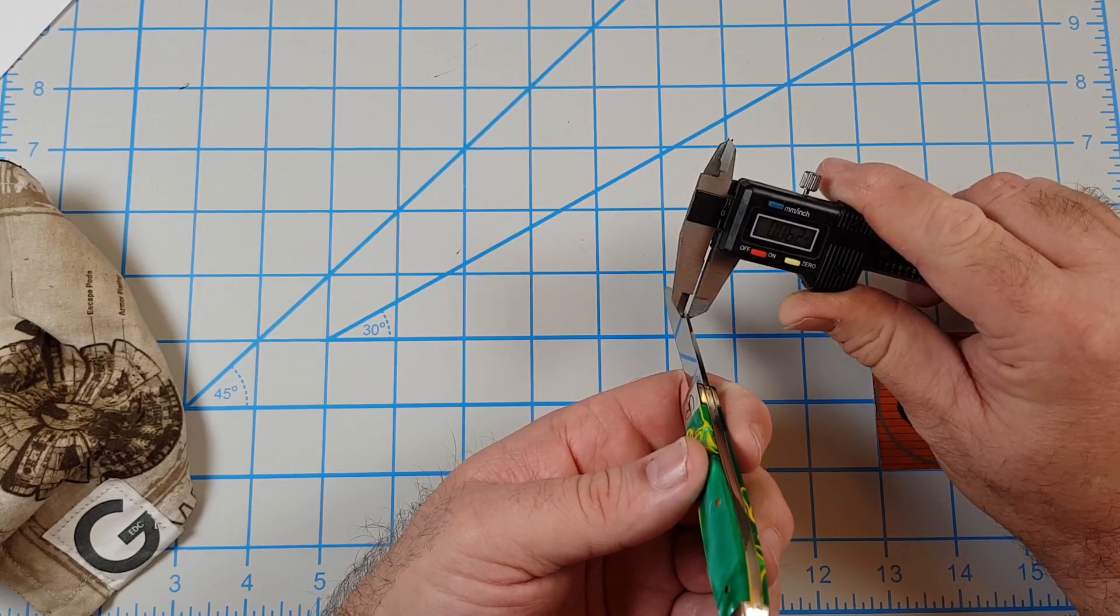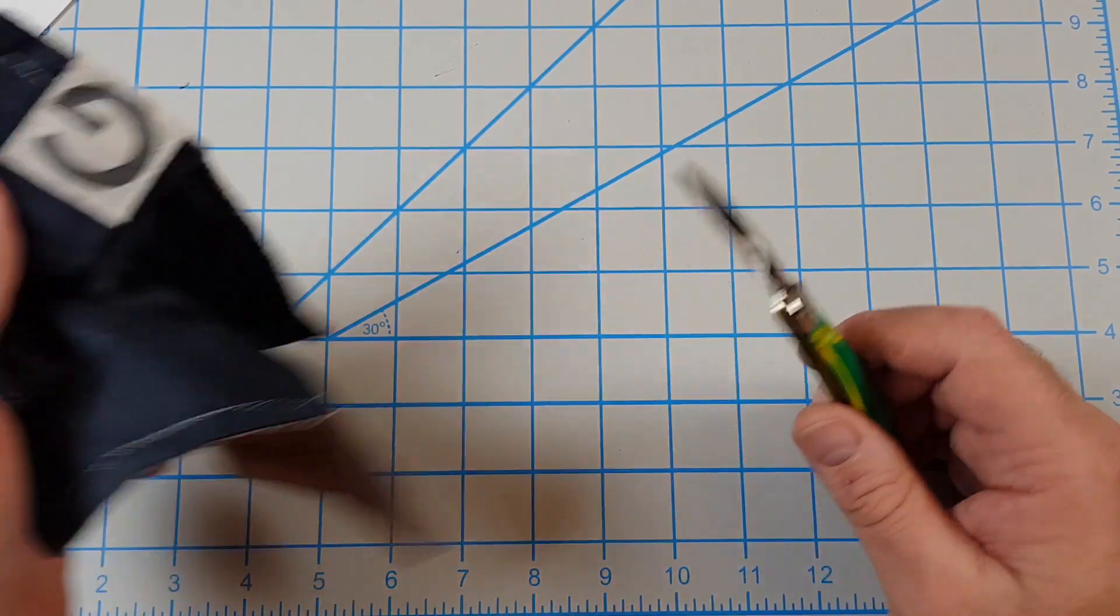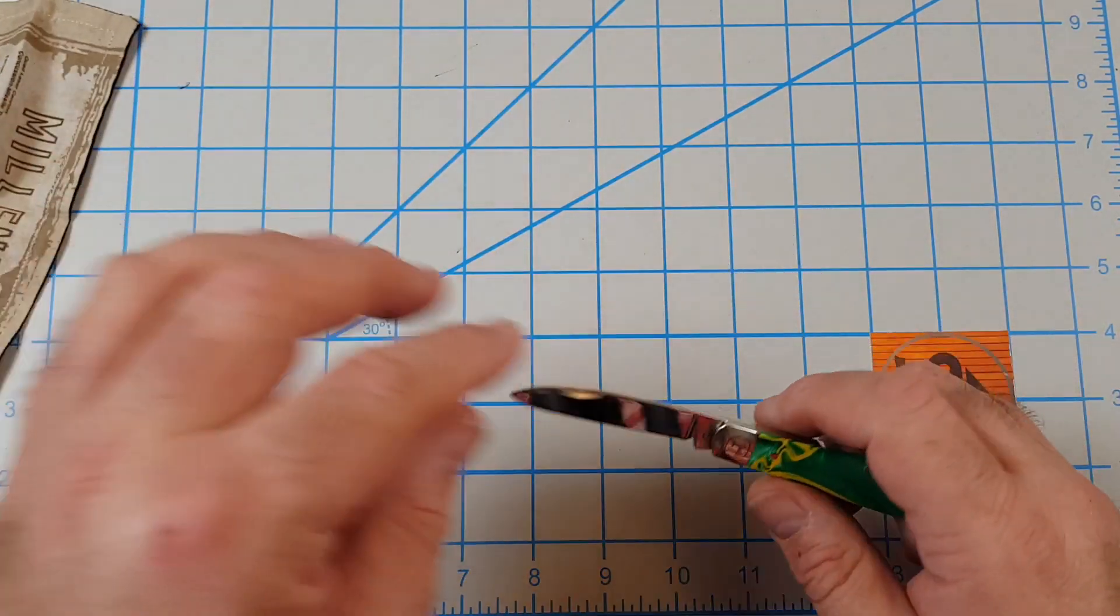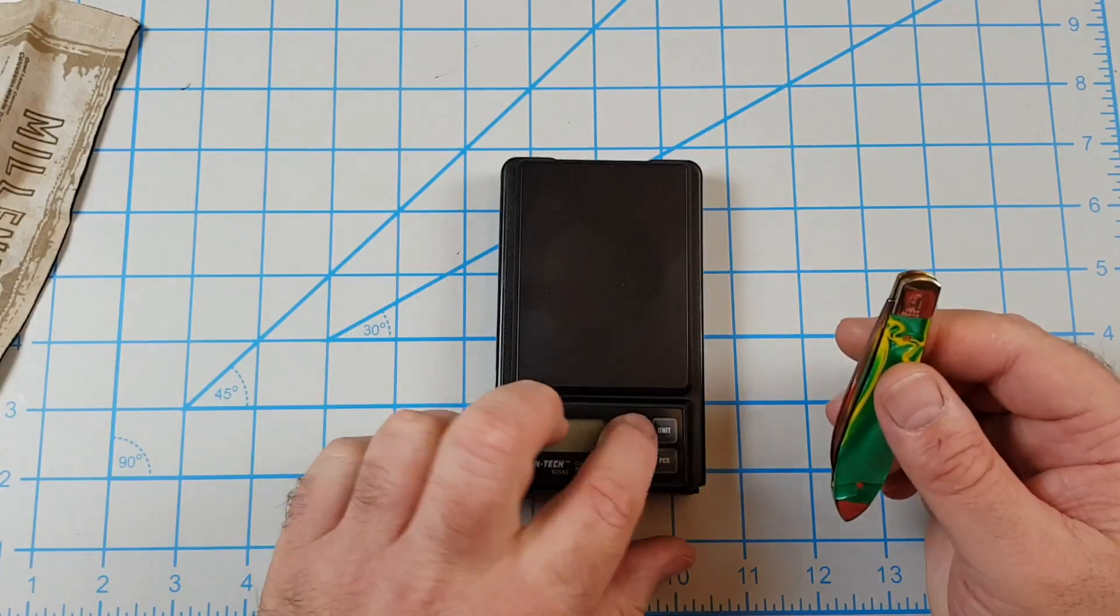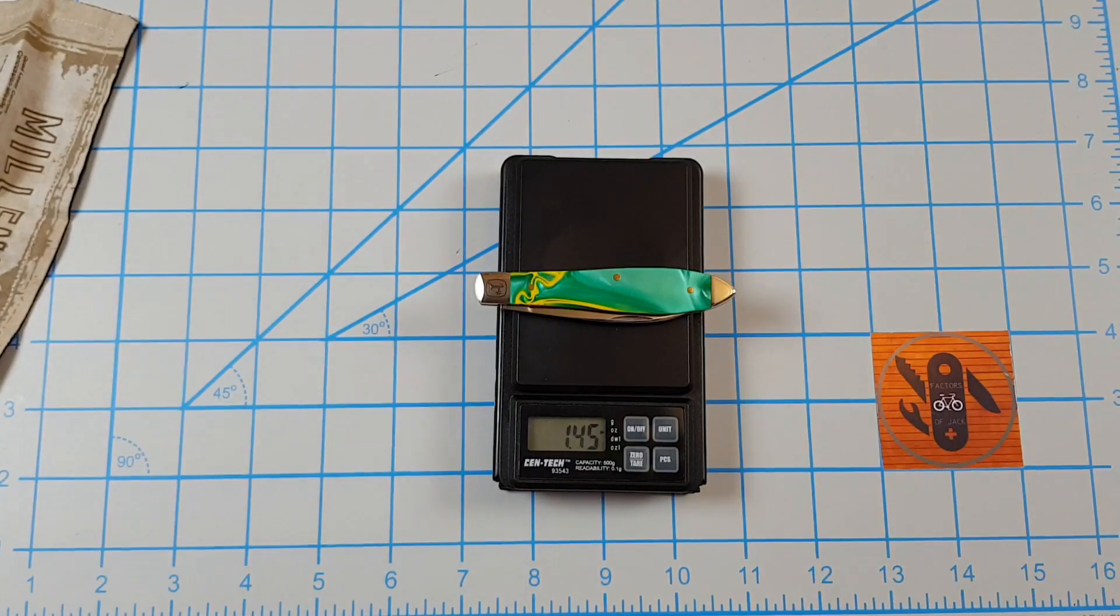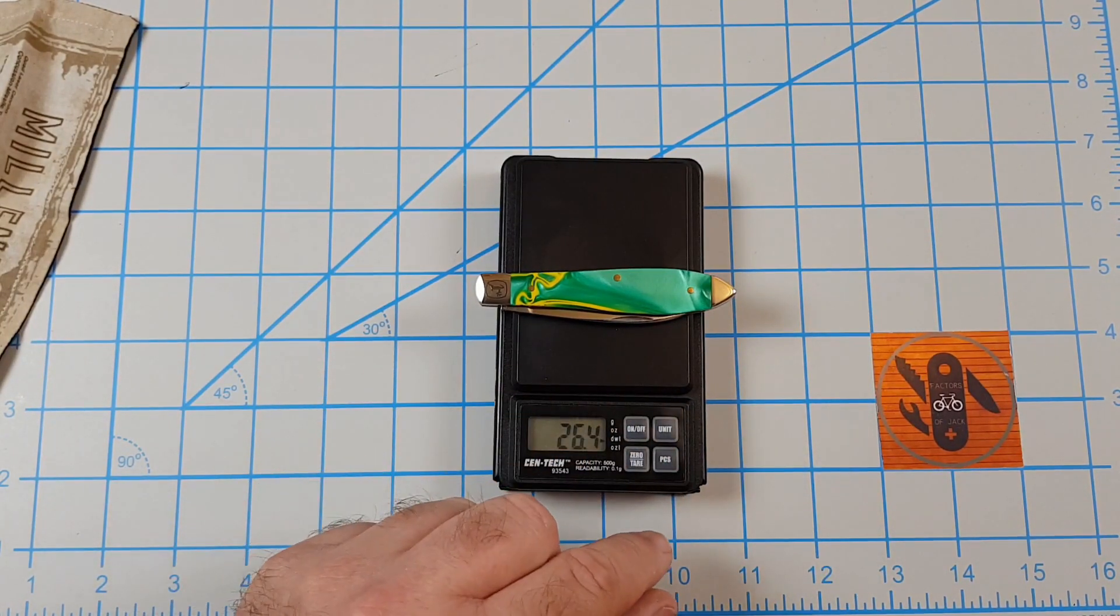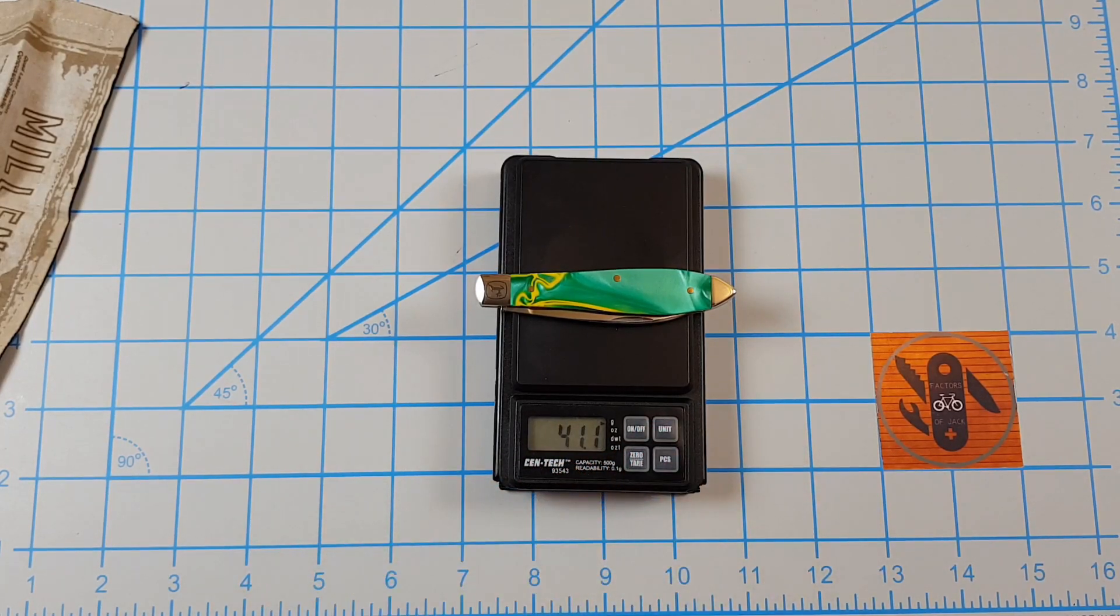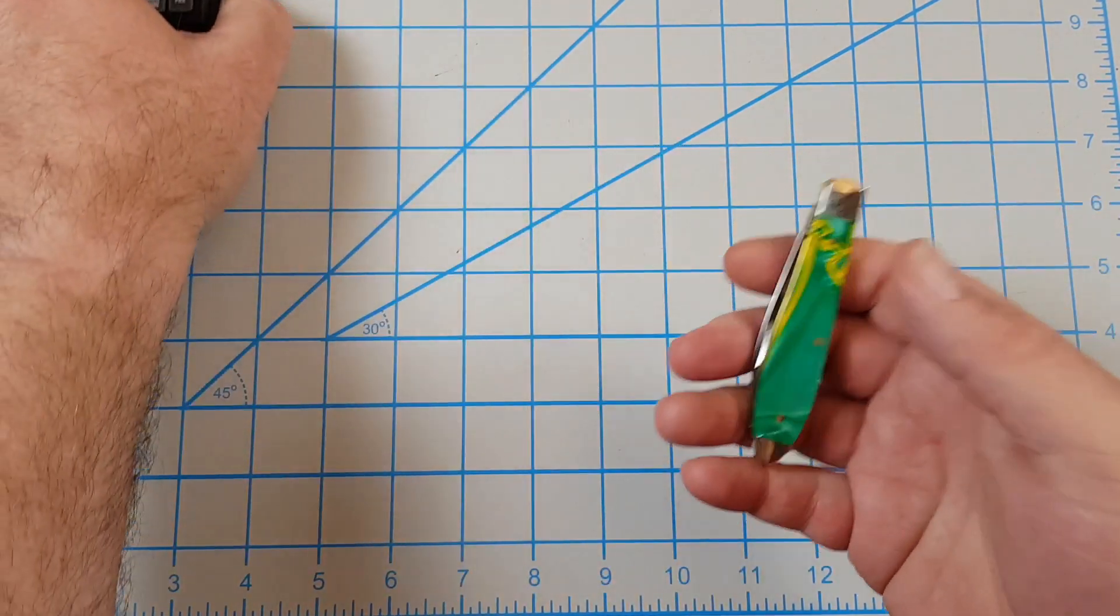This thing's pretty light. It weighs 1.45 ounces, and in grams, 41.1 grams. So it is really light.